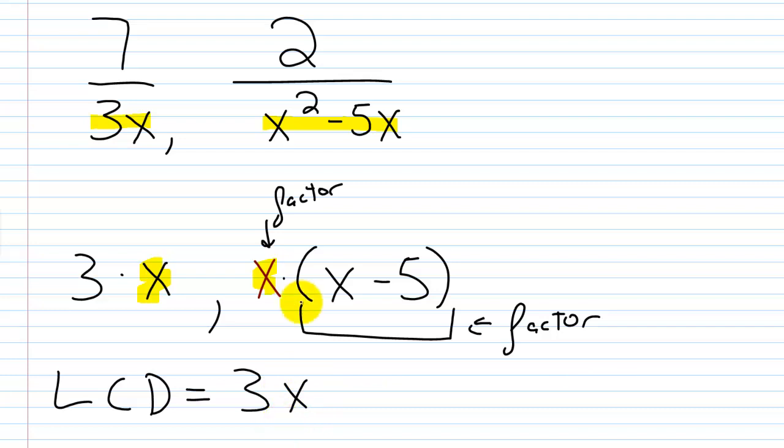And then I have an x minus 5, that's another factor. So then I'll have x minus 5. And then basically I'm just going to multiply these guys together. Now, when we're working with rational expressions, a lot of times you're just going to leave it like this. Your LCD will just be listed as 3x times x minus 5.